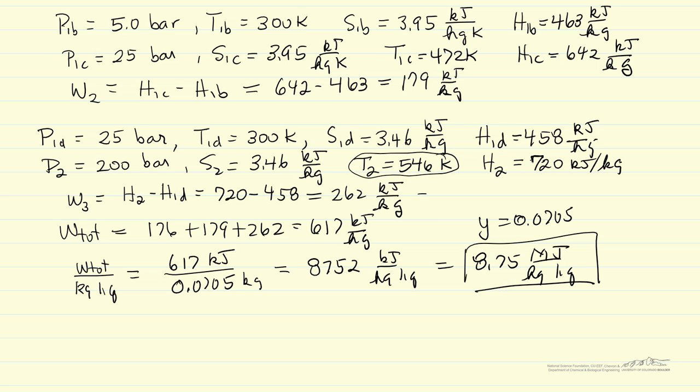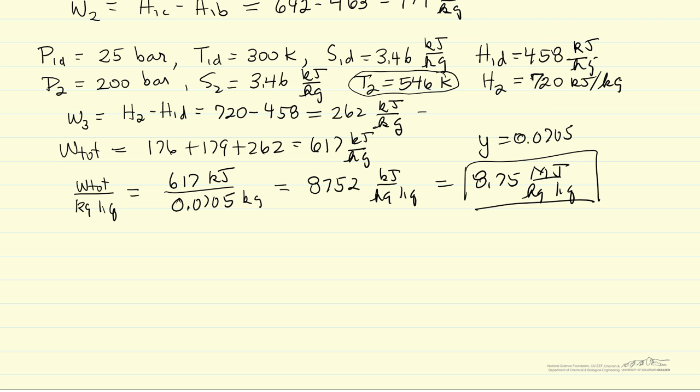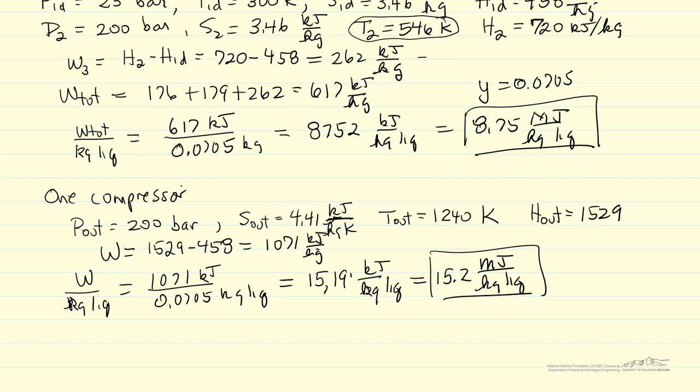We could do the same calculation for one compressor that went from 1 bar to 200 bar. If we did that, I'll just write the numbers down here. Same calculation. The temperature is reasonably high for the outlet of the compressor. But notice, the work is almost double if we use one compressor going through the entire pressure range instead of three.